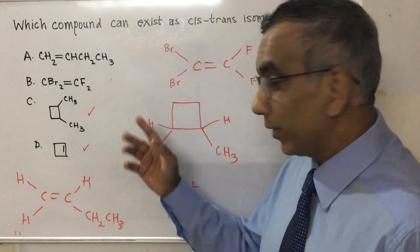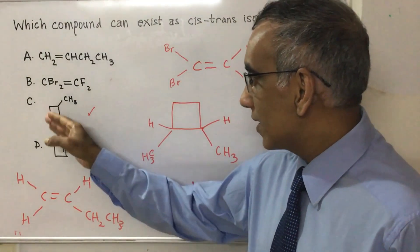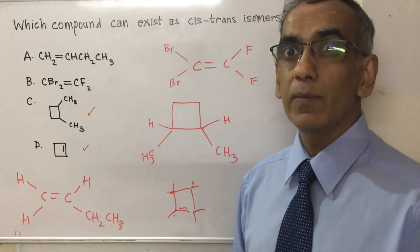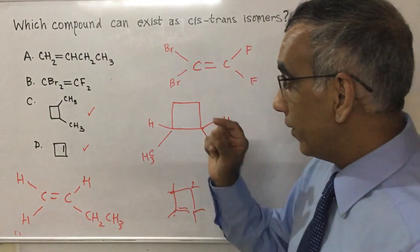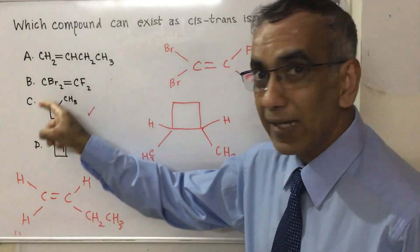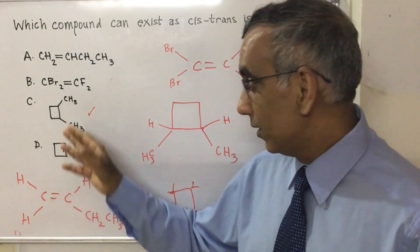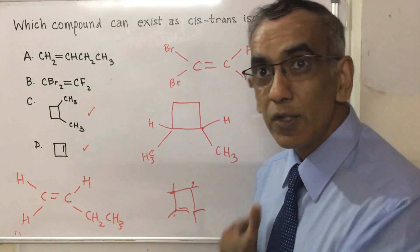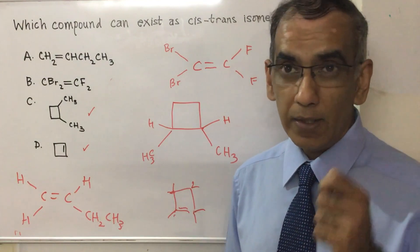And the only possible case would be where you have this cyclic structure. And it's important that when you look at cis-trans isomerism or EZ isomerism, that you don't just focus on alkenes, but you are aware that cycloalkenes, where you have rings, those can also give rise to cis-trans or EZ isomerism.